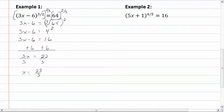Because we do have the possibility for extraneous solutions, we need to check our answer into the original equation. So that means we've got 3 times 22 thirds minus 6 to the 3 halves power, equal to 64. 3 times 22 thirds is going to give us 22. So we have 22 minus 6 to the 3 halves power, equal to 64.